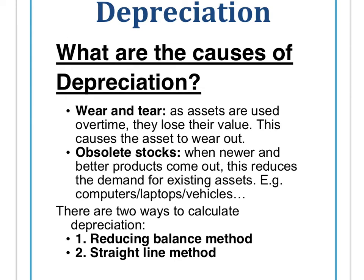The second reason for depreciation is that the asset — usually a fixed asset — will no longer become relevant to the business in terms of its objectives moving forward. The best example is a boat that, as the company expands, is no longer the right size to carry all customers, so they upgrade to a bigger one and the old boat becomes obsolete.